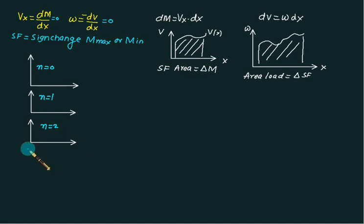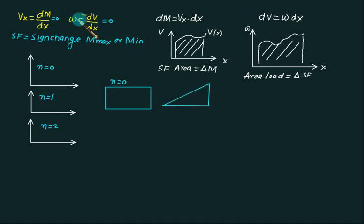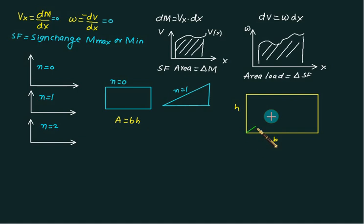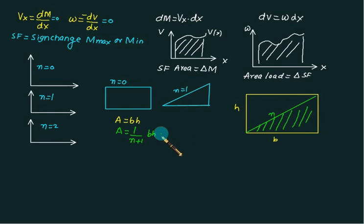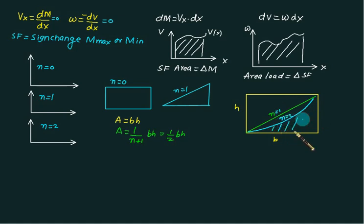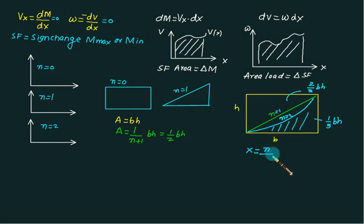Every time your degree increases by one. Initially the load diagram is degree zero, then the SFD becomes degree one, and the BMD becomes degree two. So n=0 stands for a rectangle — if the load is constant, the shear force will be a triangle (degree one). The area formula is 1/(n+1) × base × height. For a triangle (n=1) this gives (1/2)bh. For degree two, the area below the curve is (1/3)bh, and the remaining area is (2/3)bh.